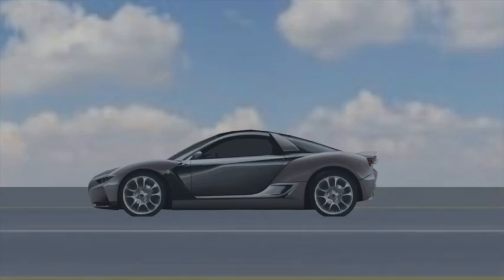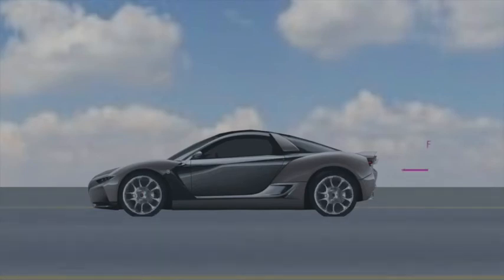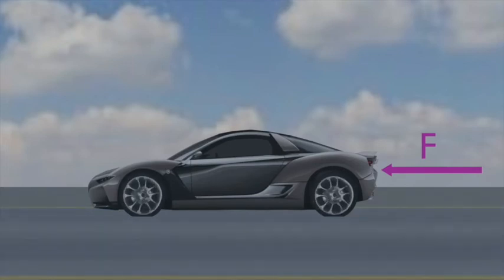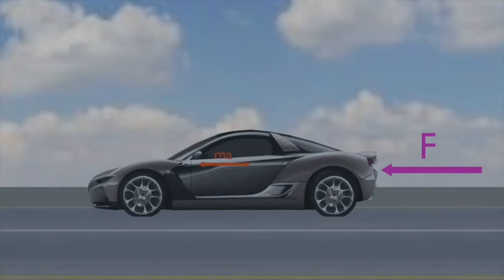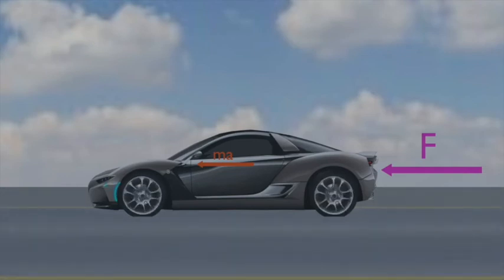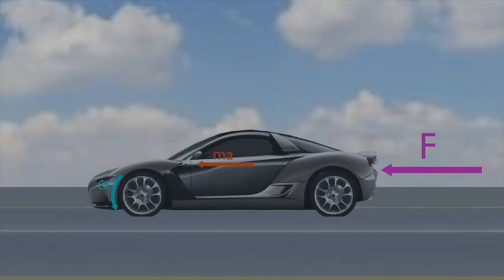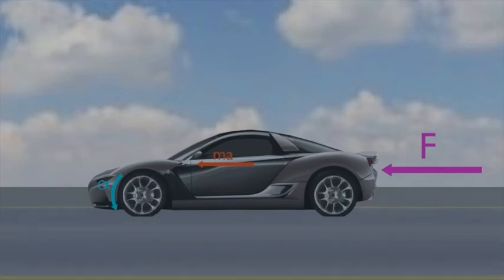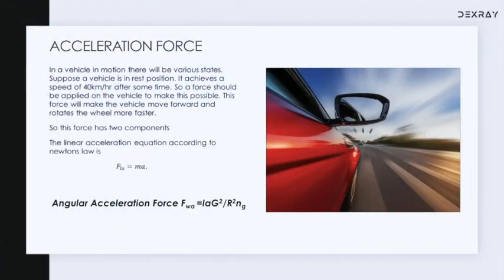Assume that our vehicle is moving forward at 40 meters per second and we need to increase its velocity to 60 meters per second. For that, we should accelerate the vehicle. In order to accelerate the vehicle, we must apply a force that moves the vehicle forward as well as rotates the wheels faster. So it has two components: one is the linear acceleration component which moves the vehicle forward linearly, and the other is the angular acceleration component which rotates the wheels faster. This force in total is known as acceleration force.